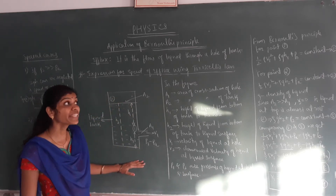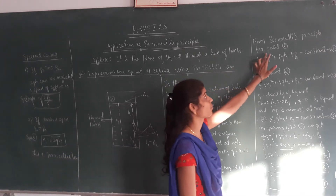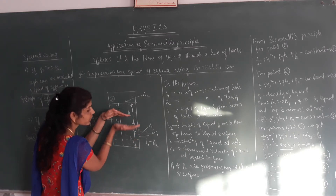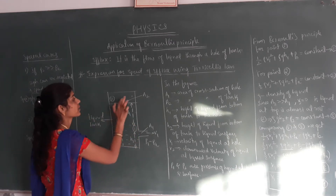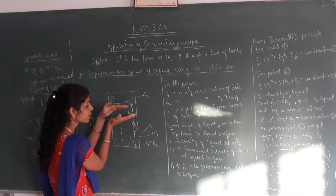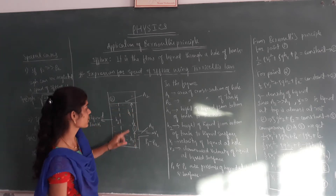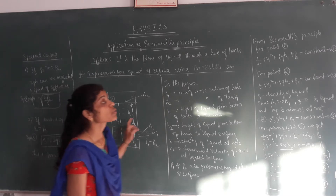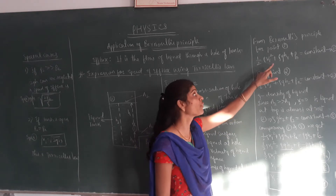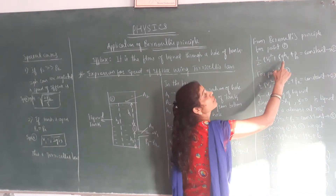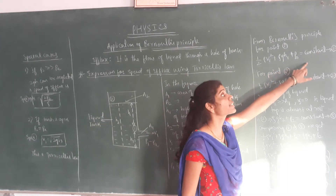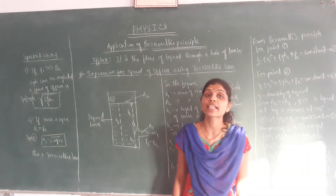By applying Bernoulli's principle for point 1 — where the tank is filled with water and atmospheric pressure P0 is present — if we apply Bernoulli's principle to this surface, we get: half rho V1 squared plus rho g H1 plus P0 equals constant. Let us consider this as equation 1.